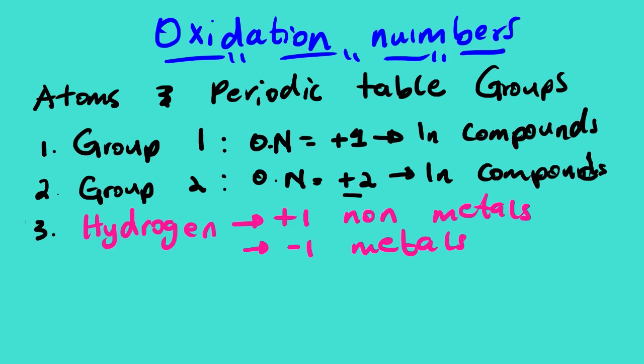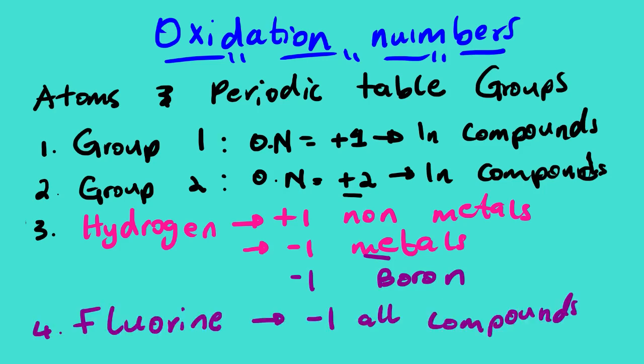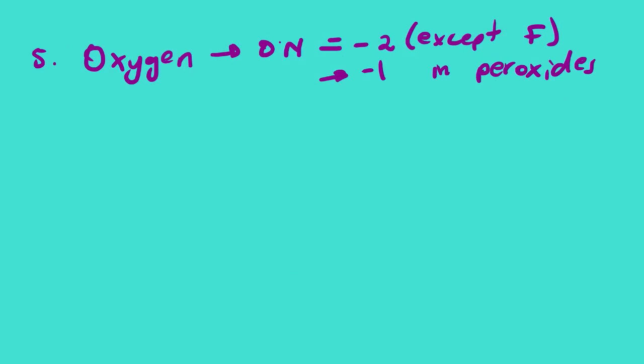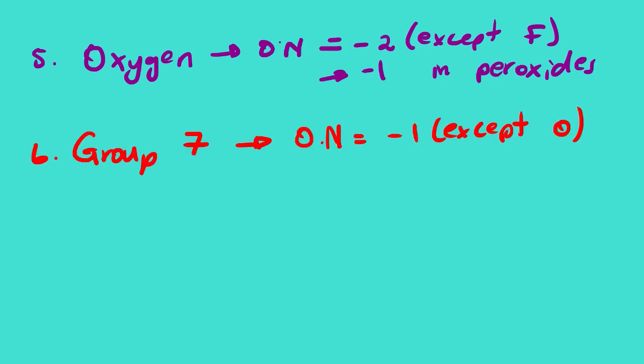For hydrogen: the oxidation number is 1+ when it bonds with nonmetals, and 1− when it bonds with metals or boron. The oxidation number of fluorine is always 1− in all compounds. Oxygen has an oxidation number of 2− in all compounds, except when bonding with fluorine; and 1− when bonding in peroxides. All elements in Group 7 have an oxidation number of −1, except when bonding with oxygen.